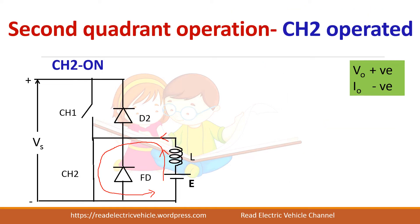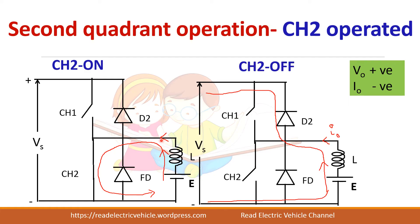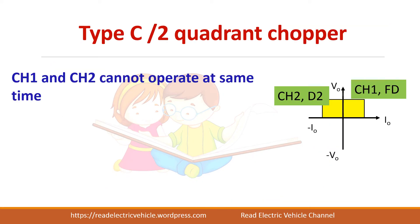For second quadrant operation, I-naught should be negative. When CH2 is turned on, current flows such that it is negative. When the switch is turned off, the inductor current cannot change its direction immediately, so it flows through diode D1 and returns to the supply. I-naught is negative in this case and voltage is positive because it is connected to the positive supply.